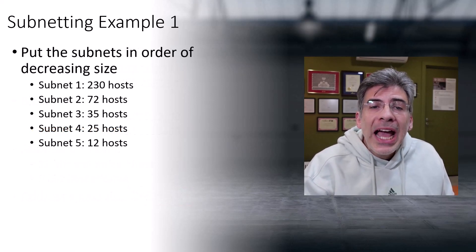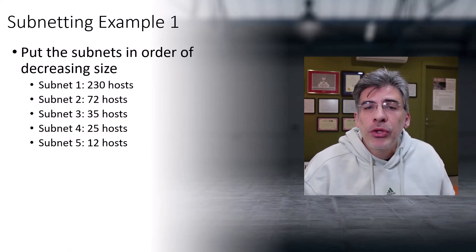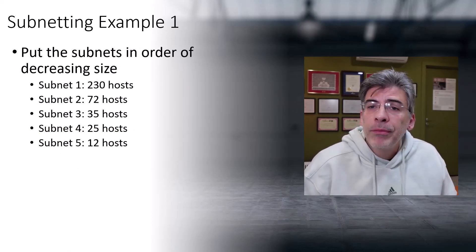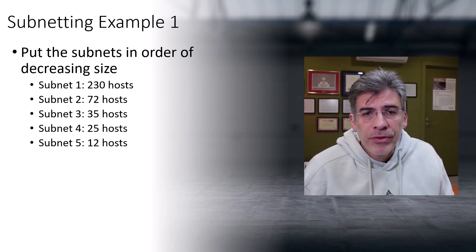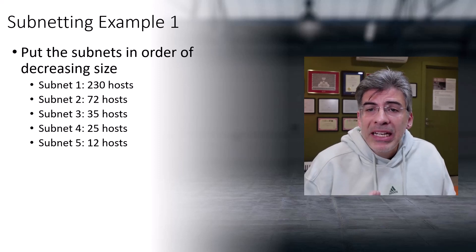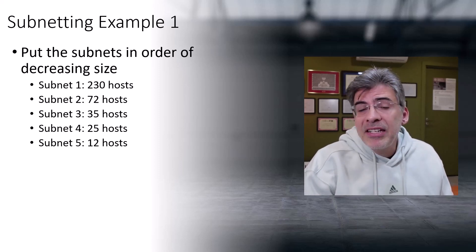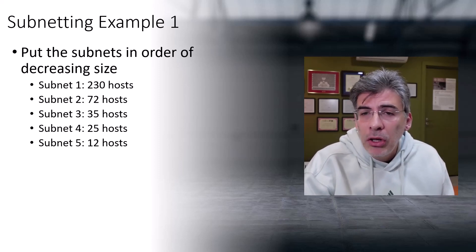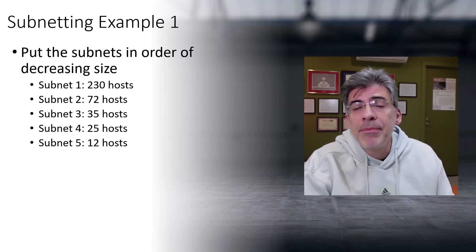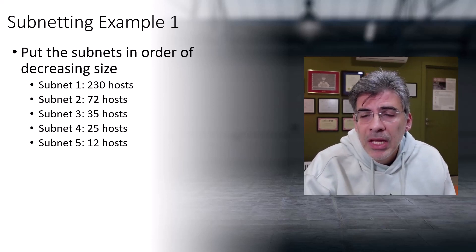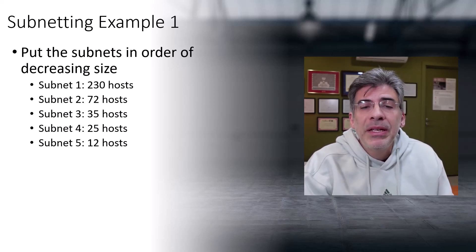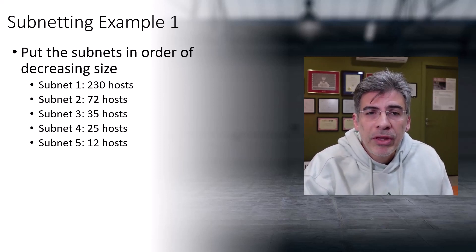The first thing to do is list those subnets in order from largest to smallest based on the required number of hosts. Here's our list in decreasing order. This is an important step — if we don't do this, our subnetting will not be successful. I've also labeled each subnet so it will be easier to refer to them.